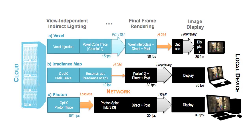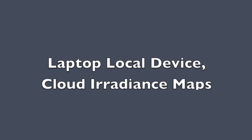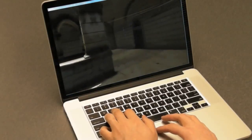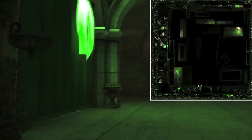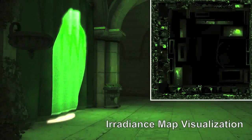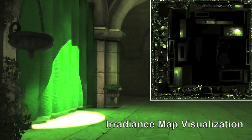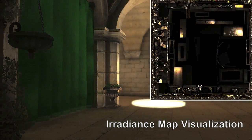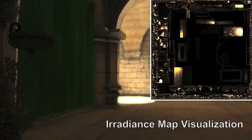For the user, the cloud is invisible. He or she sees only the local device. We experiment with three system variants that target different local device capabilities. The irradiance map variant of CloudLite supports mid-range devices such as a laptop with a GeForce 650 GPU and Wi-Fi connection. The cloud computes dynamic irradiance maps for the entire scene and streams them to all clients using H.264 video compression. The clients then render their own final frames in the manner of current game engines.